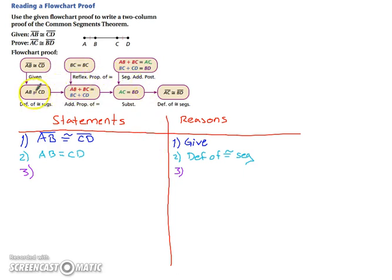When we look at our flowchart proof, we can't go to the direct right and put in AB plus BC equals BC plus CD because we need one more piece of information before we can state that. So that's when we would put in our reflexive property. So now we'll add in BC equals BC and that is our reflexive property. Now we can state our AB plus BC equals BC plus CD, and we know that based on the addition property of equality.